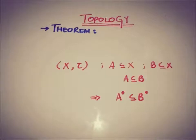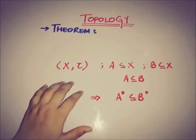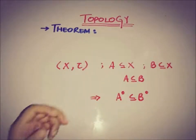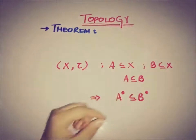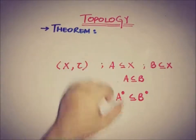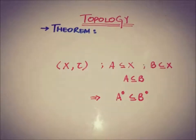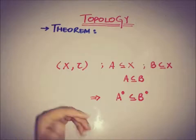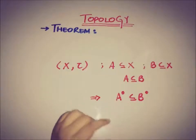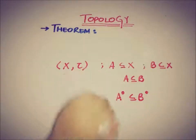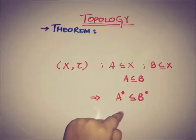The statement is: if (X, τ) is a topological space, and A and B are both subsets of X, and A is also a subset of B, then this implies that the interior of A is also a subset of the interior of B.